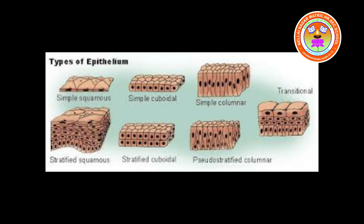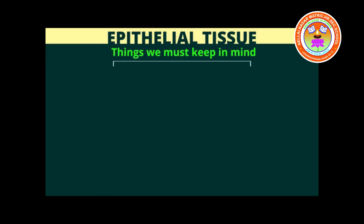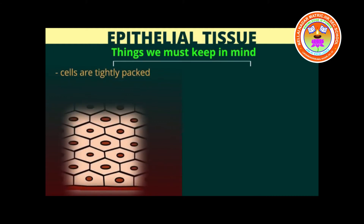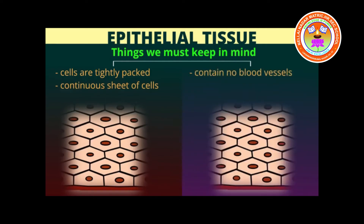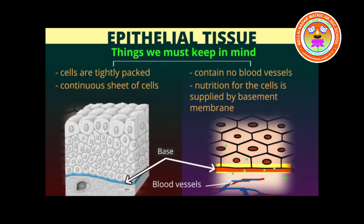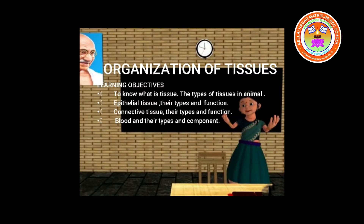In epithelial tissue, there are two things to keep in mind. The cells are tightly packed together with very little intercellular matrix because the tissue forms covering and lining; the cells have one free surface not in contact with other cells. Opposite the free surface, the cells are attached to underlying connective tissue by a non-cellular basement membrane, which is a mixture of carbohydrate and protein secreted by the epithelial and connective tissue cells. There are two types: simple epithelial tissue, composed of a single layer of cells resting on the basement membrane, and compound epithelial tissue, composed of several layers of cells where only the deepest layer rests on the basement membrane.